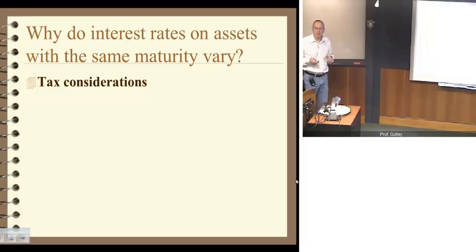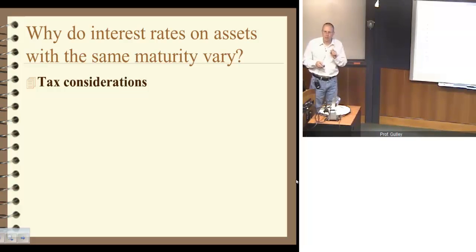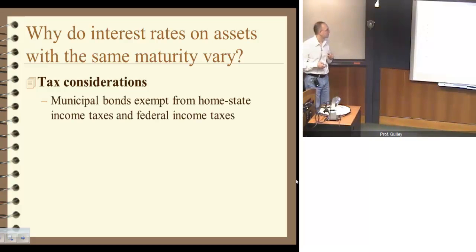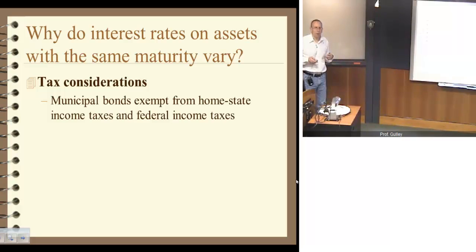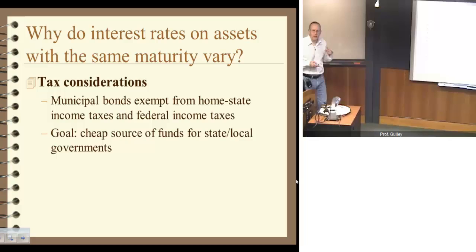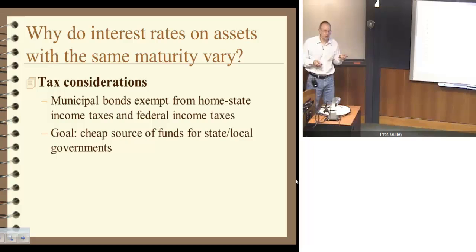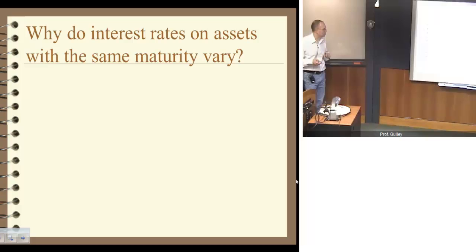Finally, there are tax considerations. Not all bonds — in terms of their interest payments — are taxed equally, and this different treatment generates different interest rates on equivalent bonds in terms of maturity. In the United States, municipal bonds are exempt from home, state, and federal income taxes on the interest they pay. The intent of this is to act as a subsidy for local governments and other non-profit-type institutions, providing a cheap source of borrowing.